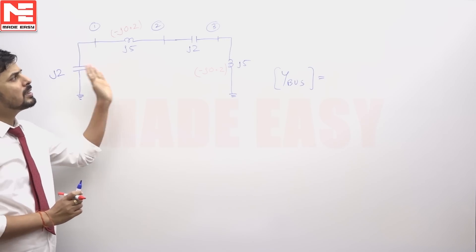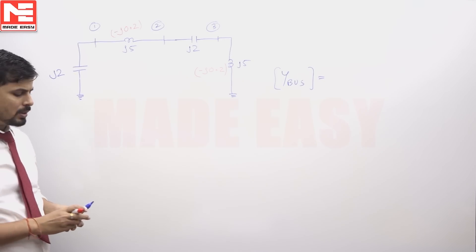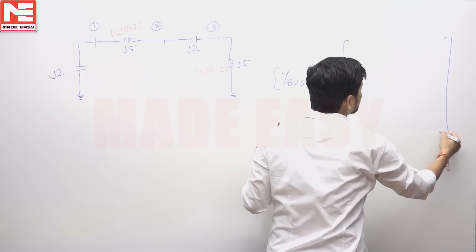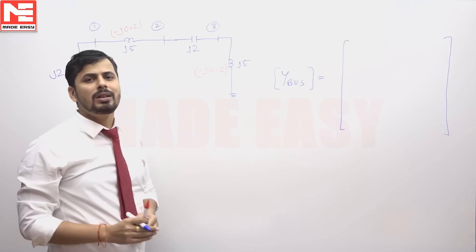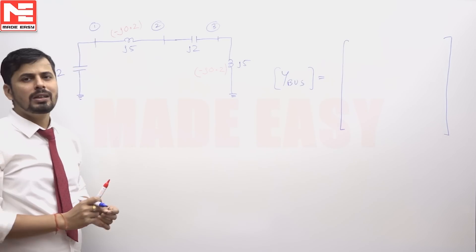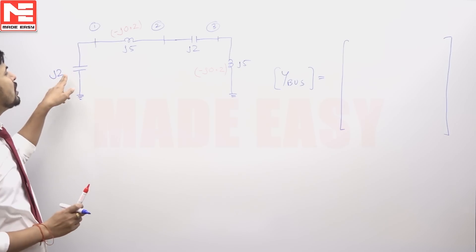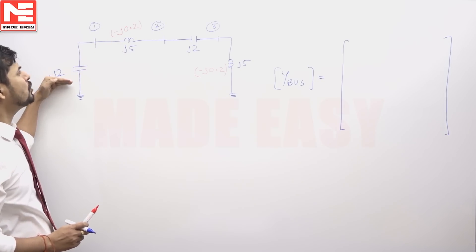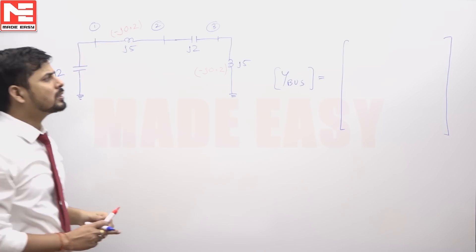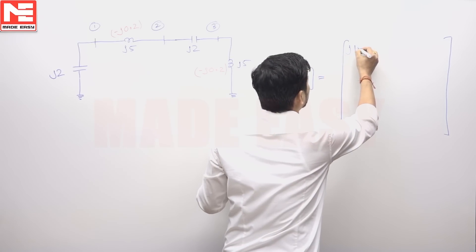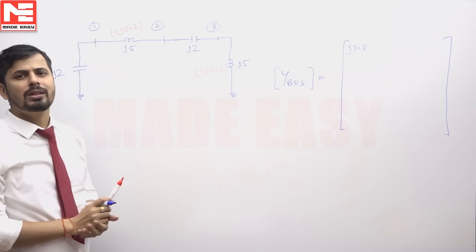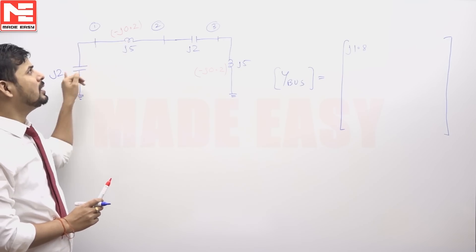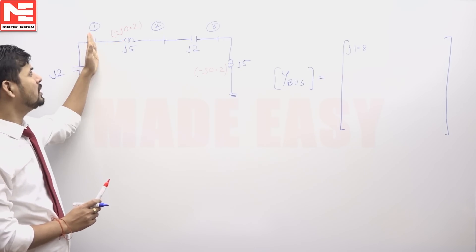It is a 3-bus system, which means the Y-bus matrix will be a 3×3 matrix. The diagonal entries of the Y-bus matrix: the first diagonal entry y11 will simply be the sum of admittances connected to bus number 1. The sum of admittances — this is j2 and this is minus j0.2 — gives j1.8. This is the first diagonal entry, formed by adding the admittances connected to that bus.